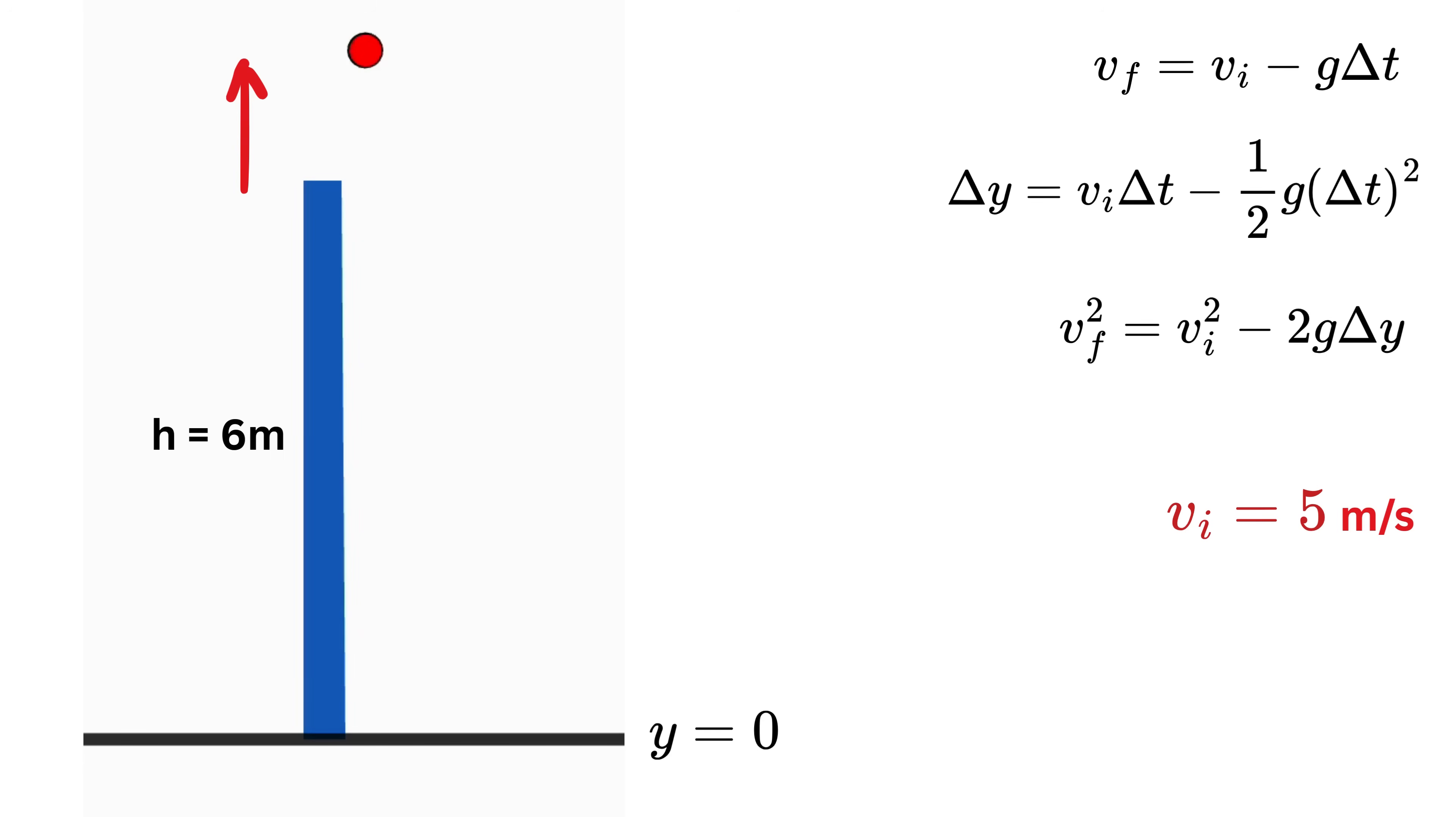Then, from that peak height, it will fall back down, accelerating under gravity, until it reaches the ground. The motion is thus a combination of upward and downward motion. The first question is to find how long it takes to reach the peak height. Okay, to solve this, collect all the known variables first.